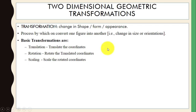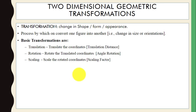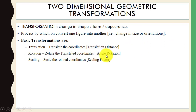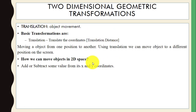In translation, you can translate the coordinates. In rotation, we can rotate the coordinates. In scaling, we can scale the object. In translation we deal with distance, in rotation we deal with an angle, and in scaling we deal with a scaling factor.